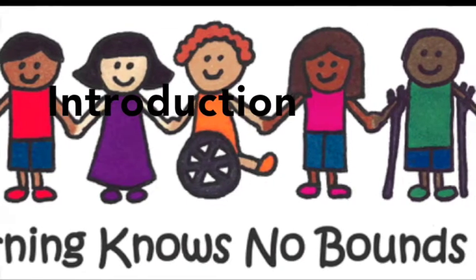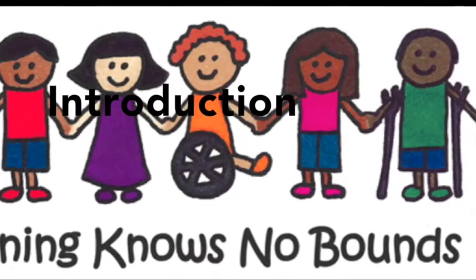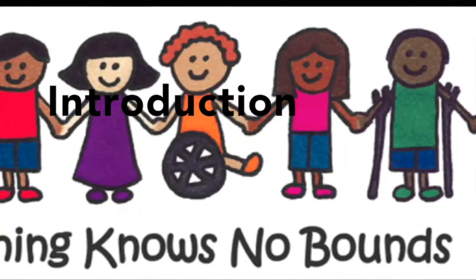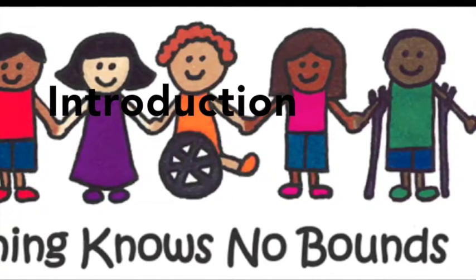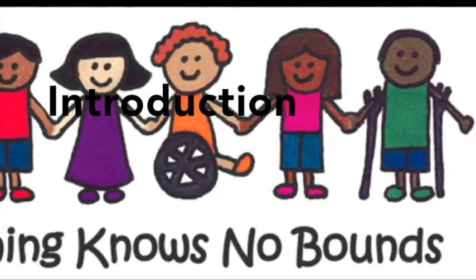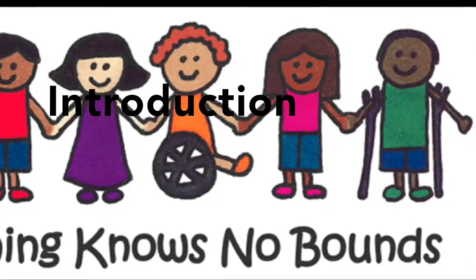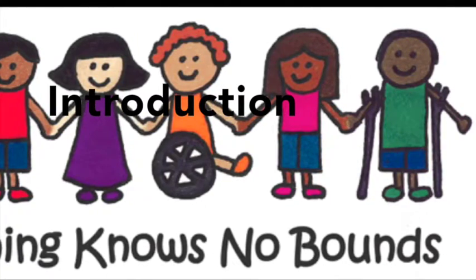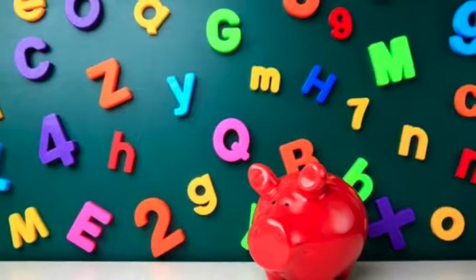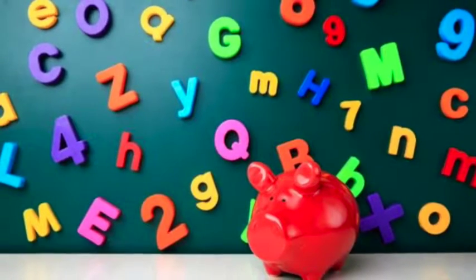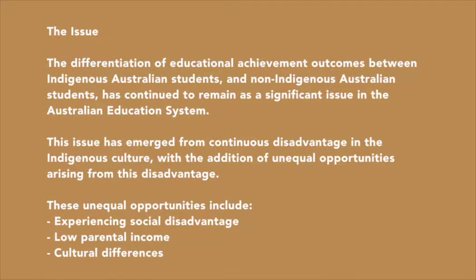These disadvantages include cultural differences, low family income, educational achievement gaps and health inequality. All of these disadvantages can severely affect young students and how they learn, which results in these students requiring additional education needs at school. The differentiation of educational outcomes between Indigenous Australian students and non-Indigenous Australian students has continued to remain a significant issue in local schools and the Australian education system.